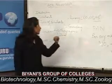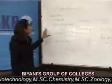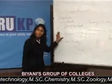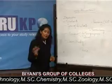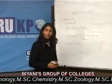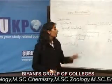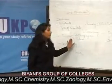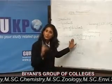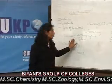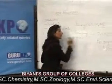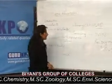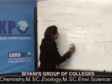Now we come to sources of air pollution. Here again, we divide sources of air pollution into two categories: first is anthropogenic, and second is natural.